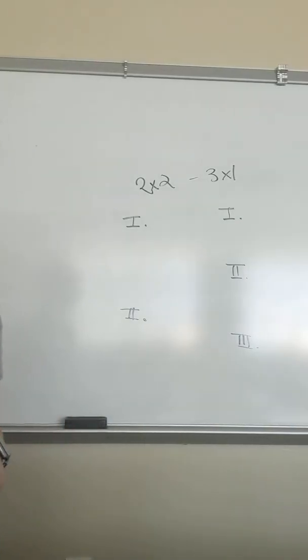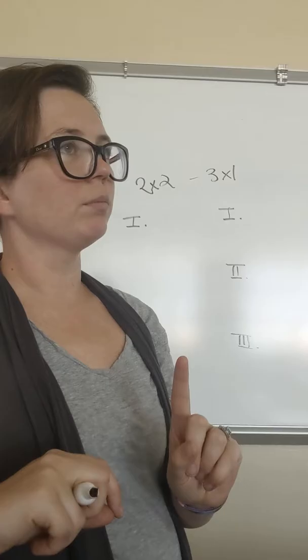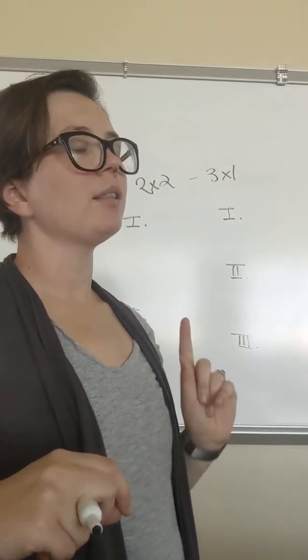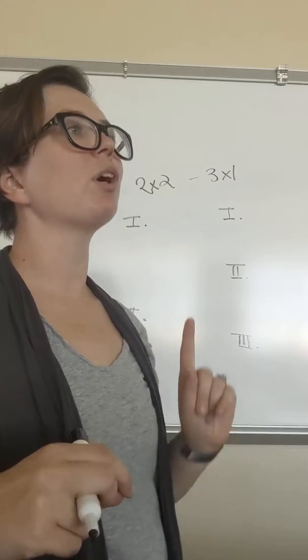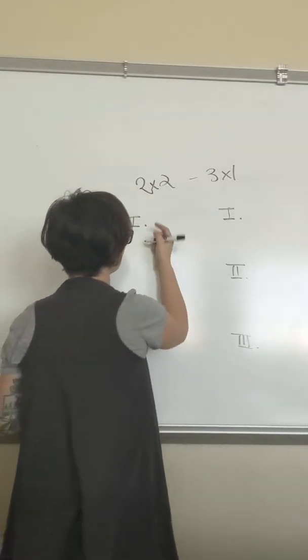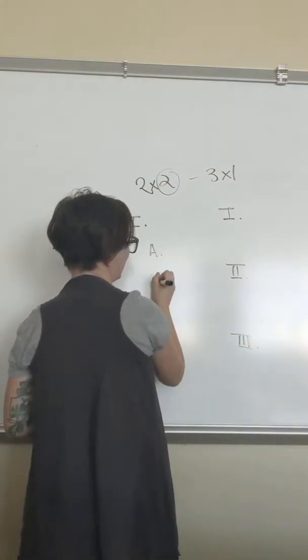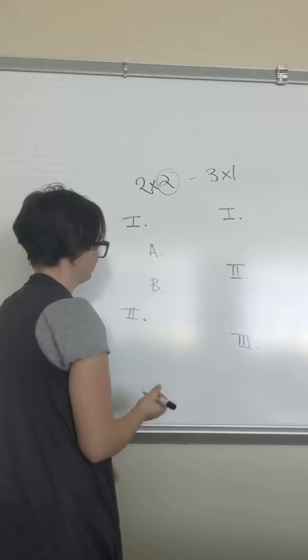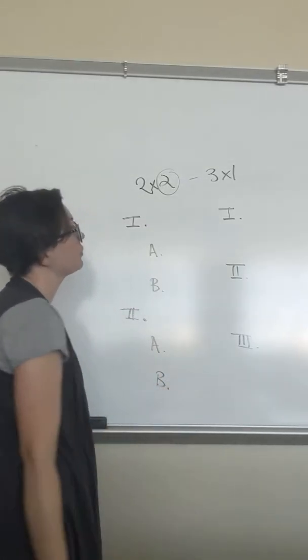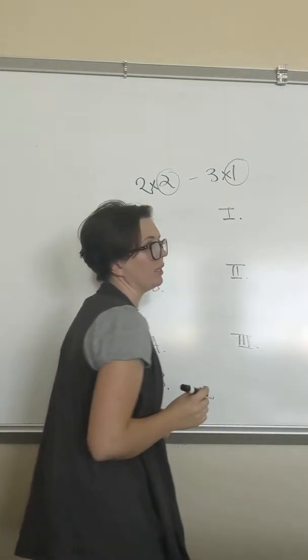Two by two and three by one. The second number, if the first number refers to the number of main body points, the second number refers to the number of sub-points. So in a two by two, we have two sub-points. We're going to have an A and a B for each. In a three by one, each one only has one real sub-point.